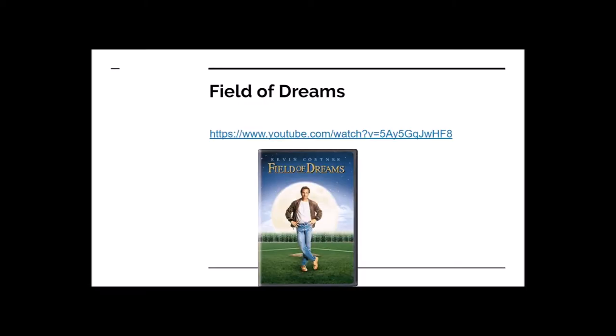We're doing Unit 5 today. Unit 5 is on page 100 in the book, and the unit is about behavioural science — the study of behaviour. The unit question is: what risks are good to take? On this slide you can see a movie poster. The movie's name is Field of Dreams, and there's a link there to the YouTube video. You're welcome to watch any YouTube video clips of the movie or the movie itself anytime.